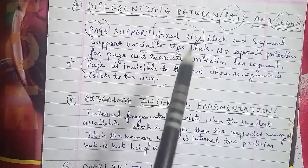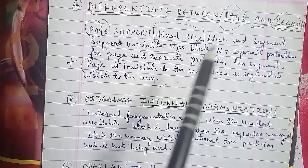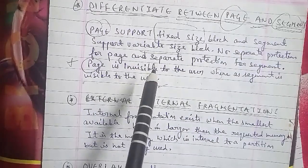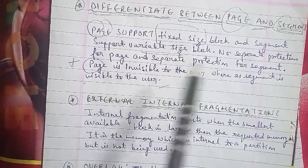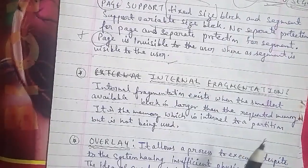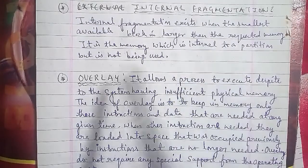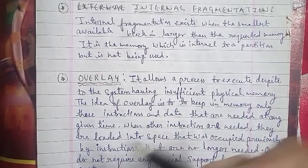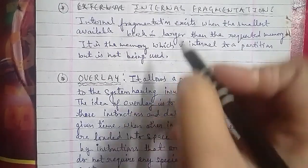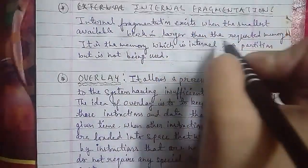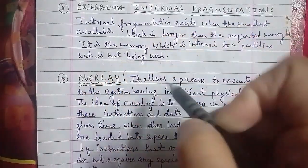Now moving to internal fragmentation — we have studied external fragmentation; these are the two types of fragmentation. Internal fragmentation exists when the smallest available block is larger than the requested memory. It is memory which is internal to a partition but is not being used.